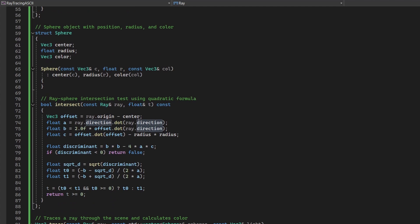The sphere struct represents the objects in our scene. Each sphere is defined by its center position, radius, and color. The key functionality here is the intersect method, which determines whether a ray intersects with the sphere using the quadratic formula. This method calculates intersection points and returns the closest positive value, ensuring that only visible intersections are considered.